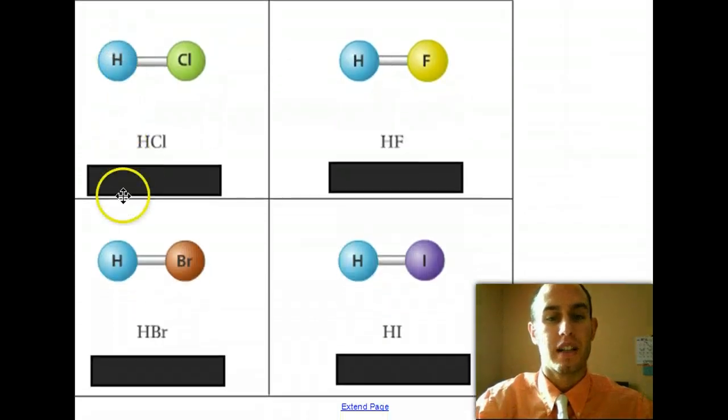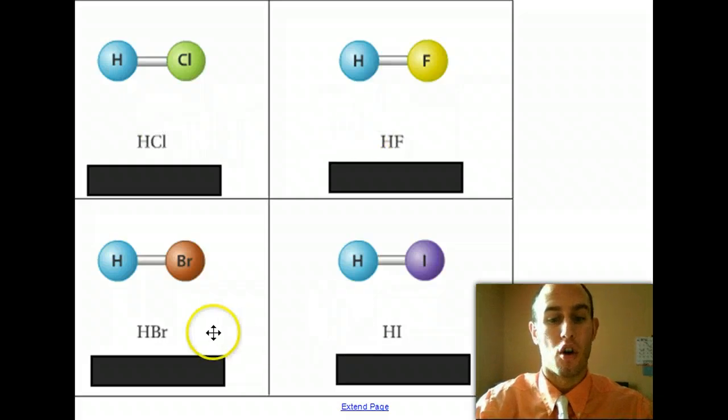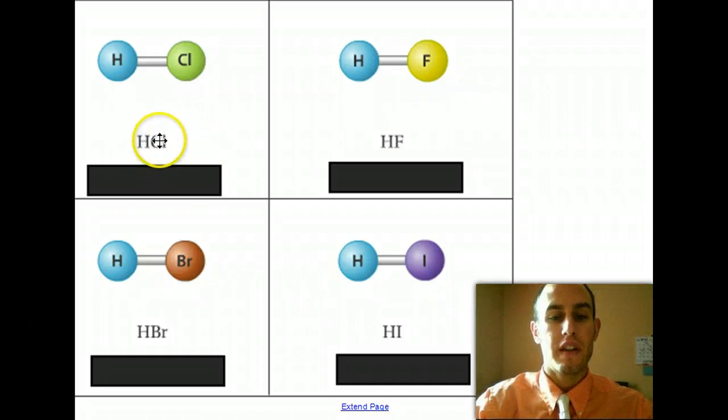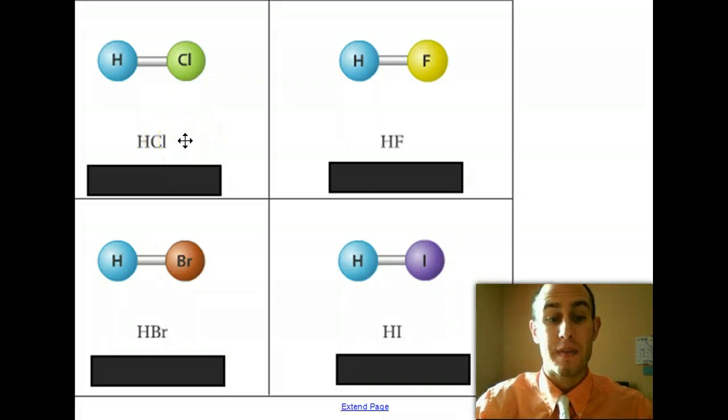So here is an example: HCl. For binary acids, and if you look at each one of these, they're all binary with two elements. You are always going to have to put the word hydro first. Then take the root word of the element, chlorine, drop the ending I-N-E, and add -ic and the word acid to name our acid.